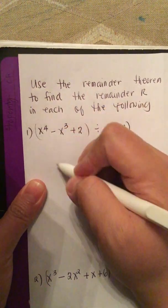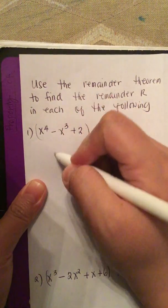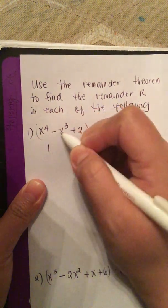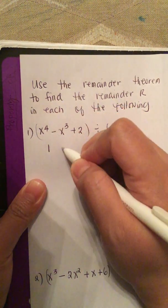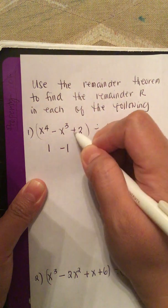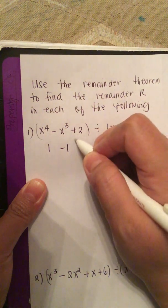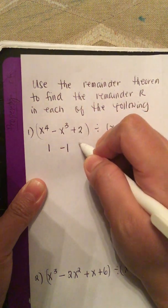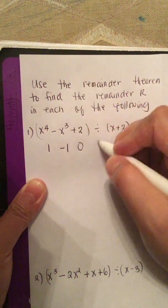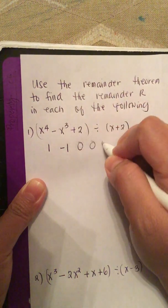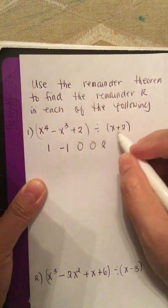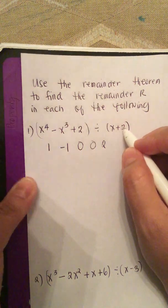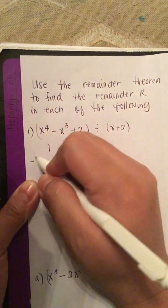We list all the coefficients. The x to the 4th coefficient is 1, the x cubed coefficient is negative 1, then 0 for x squared, 0 for x, and 2 for the constant. Since we have x plus 2, the root is negative 2.